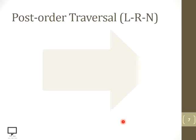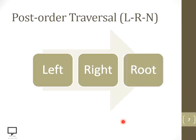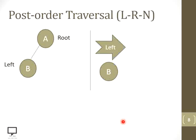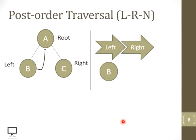Post-order traversal follows the sequence of: first a left subtree, then a right subtree, and then the root node. If a root node A is having a left child B, then first the left child B will get traversed, then it will return back to the root node and shift its control to the right subtree. After processing the right subtree, it returns to process the root node. So we have done left, then right, and then it's time to process the root node.